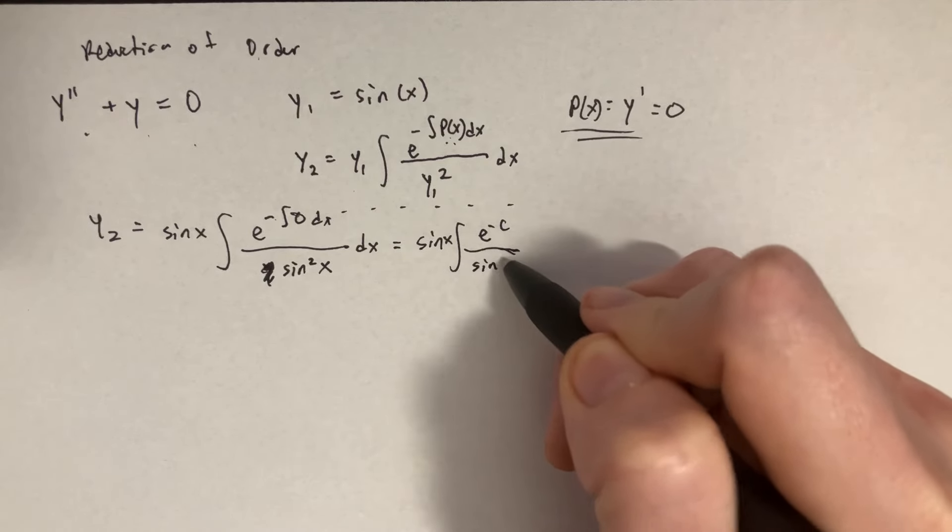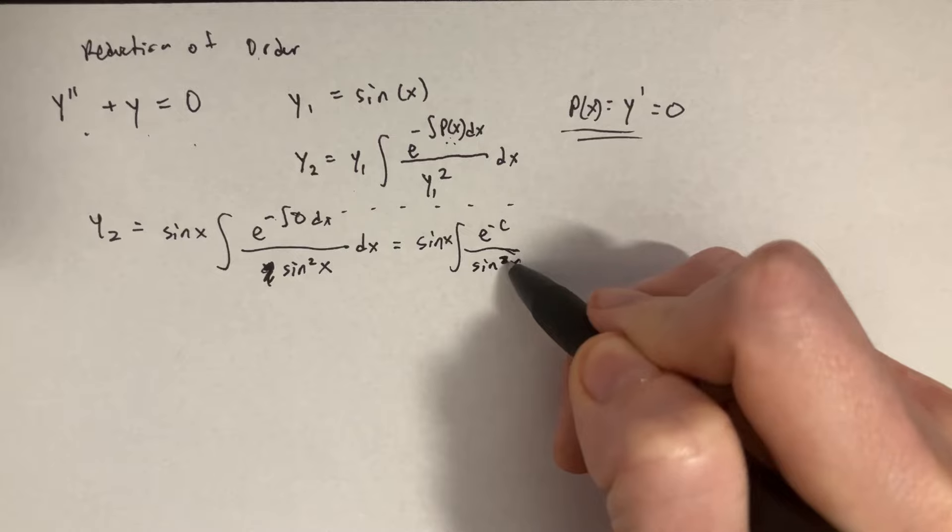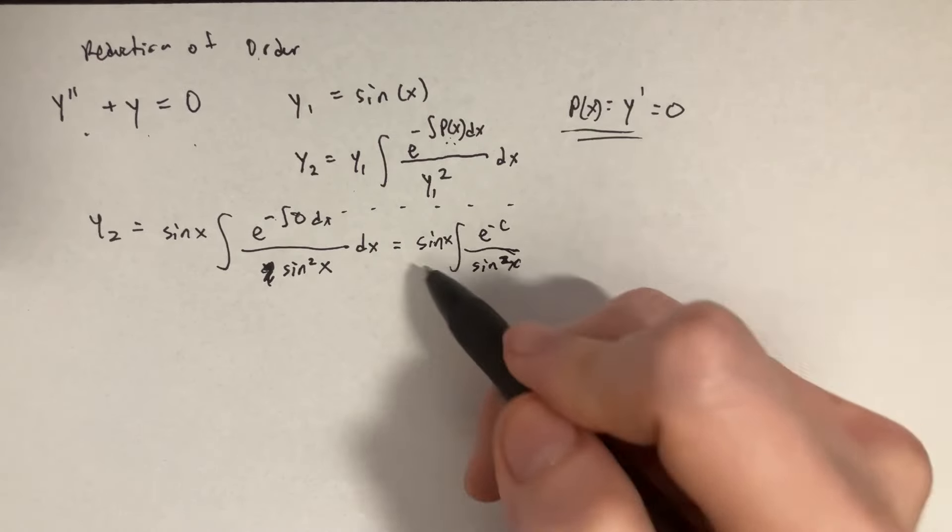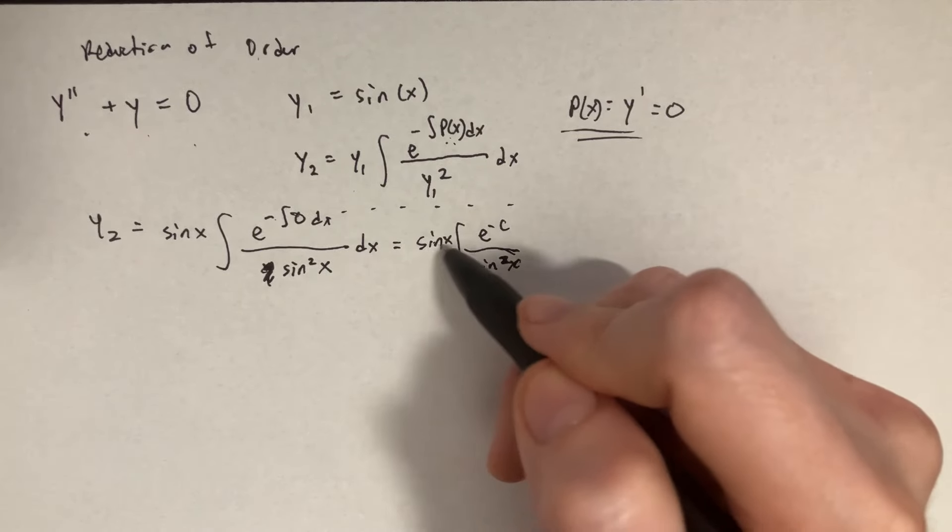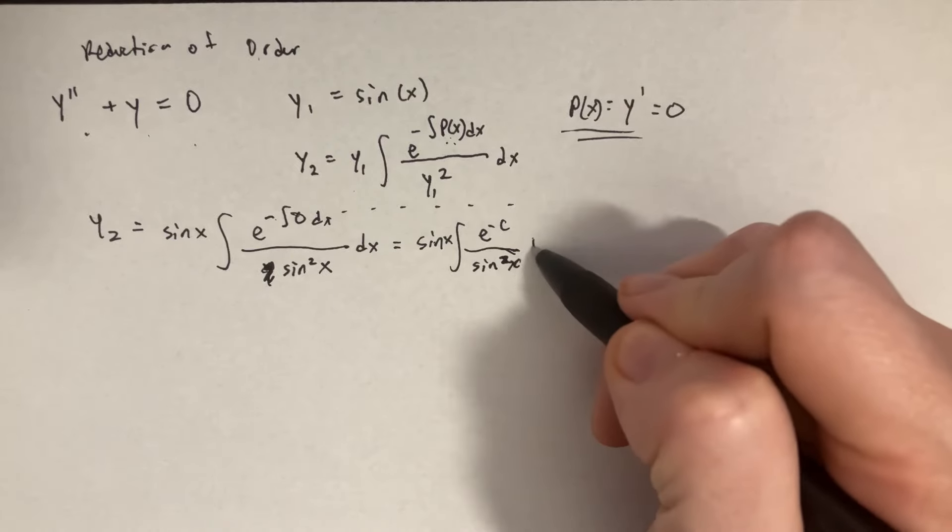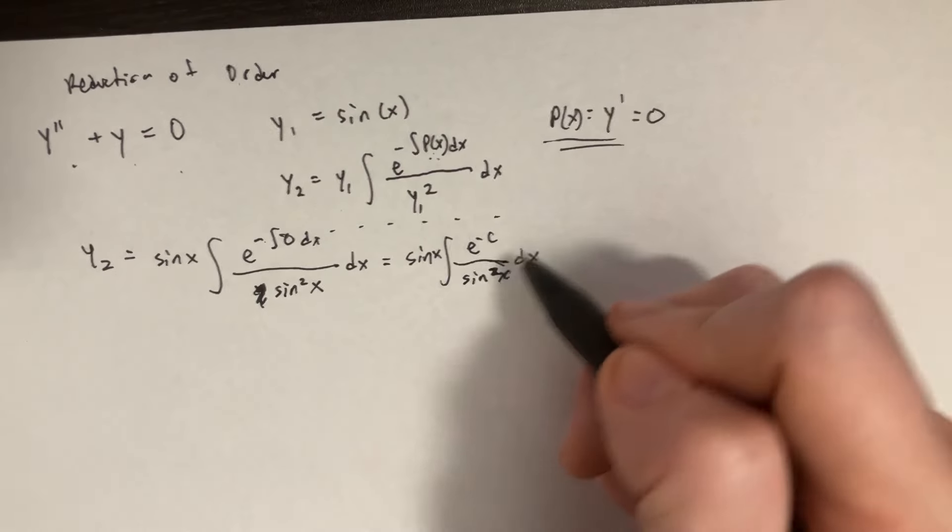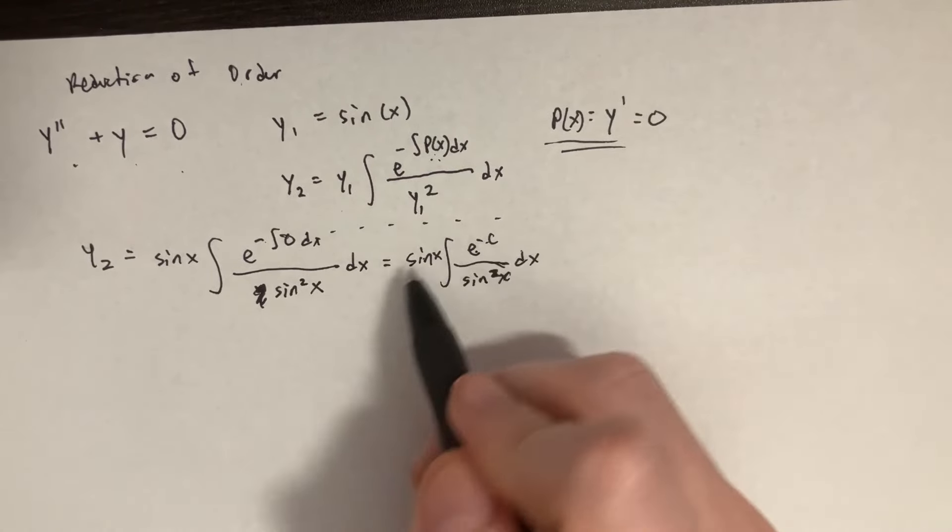The bottom part, we still have this sine squared of x. And now these signs, those are not going to cancel. This is outside of the integral, so we have to deal with that. But what we can do with this e to the negative c is we can actually pull that out.